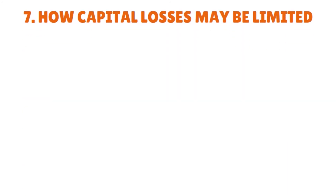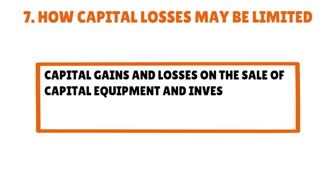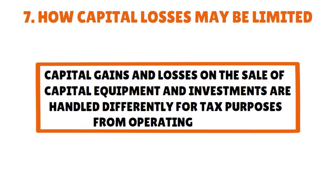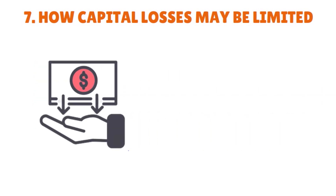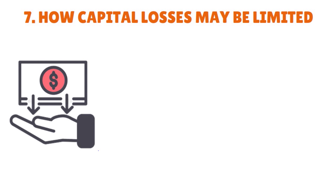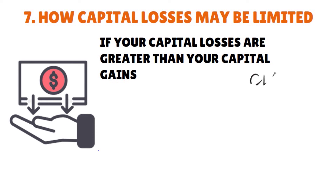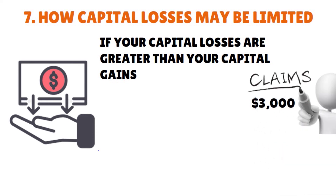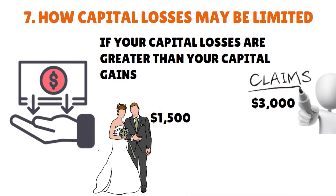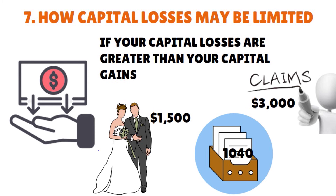This video talks about business operating losses — net operating losses, or NOL. Capital gains and losses on the sale of capital equipment and investments are handled differently for tax purposes from operating losses. For capital losses passed through to your personal tax return, if your capital losses are greater than your capital gains, you can claim the excess loss if it is the lesser of $3,000 — or $1,500 if married filing separately — or your total net loss on Form 1040 Schedule D.